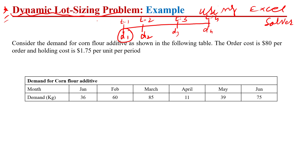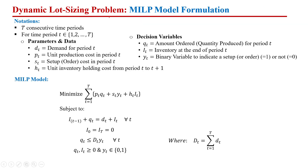To formulate the dynamic lot sizing problem into a mathematical model, we have a finite planning horizon with discrete time periods. We represent the time period with t, where small t represents time periods 1, 2, up to capital T, and capital T represents the highest time period in the planning horizon — whether we are considering a four-, five-, or six-month planning horizon.